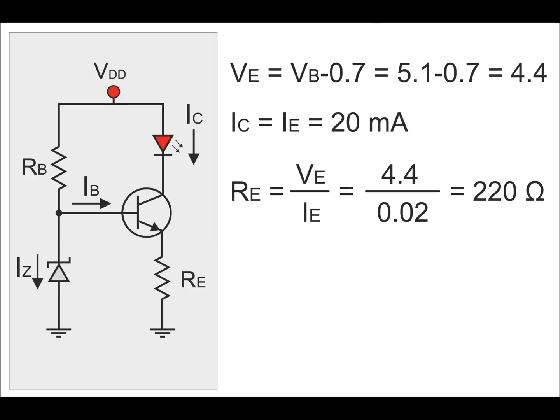For the output circuit, the emitter voltage will be 4.4 volts, so I will be using a 220 ohms resistor for the 20 mA current.